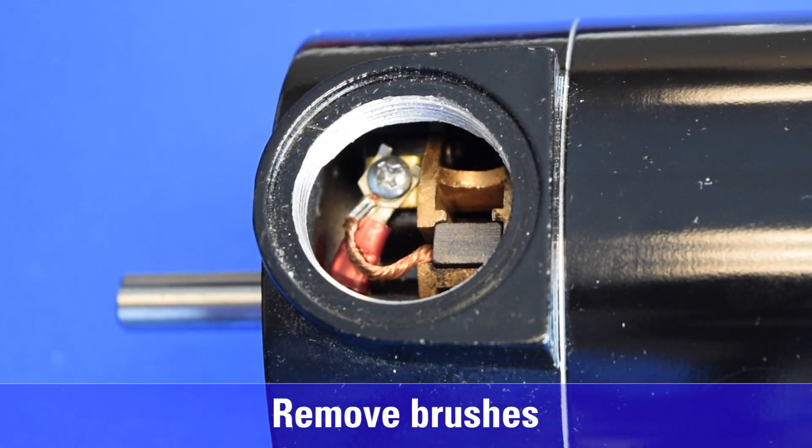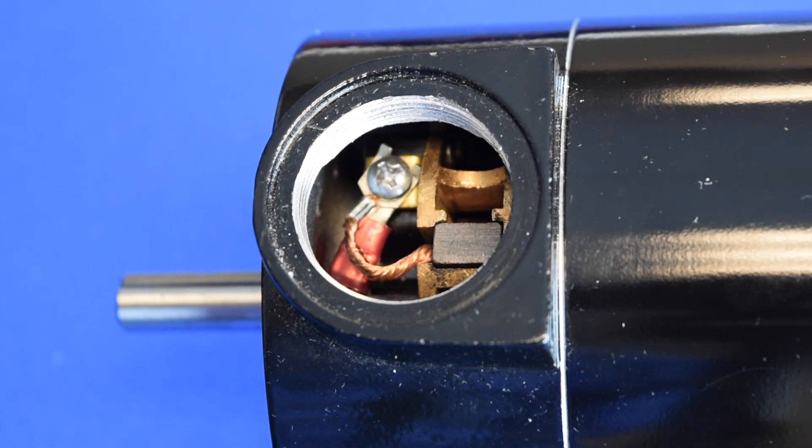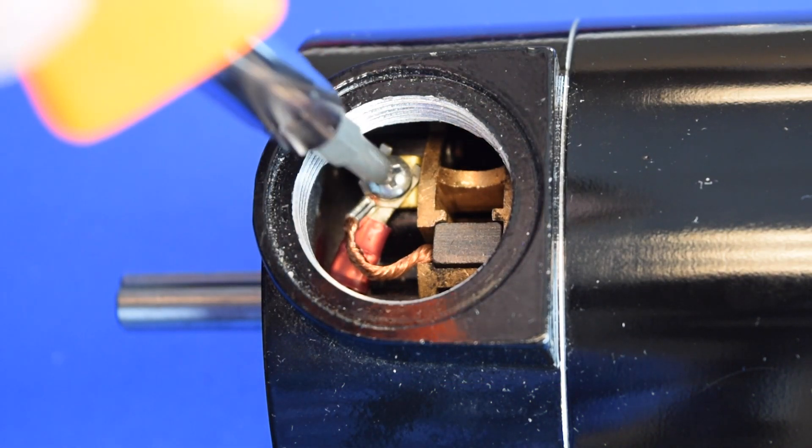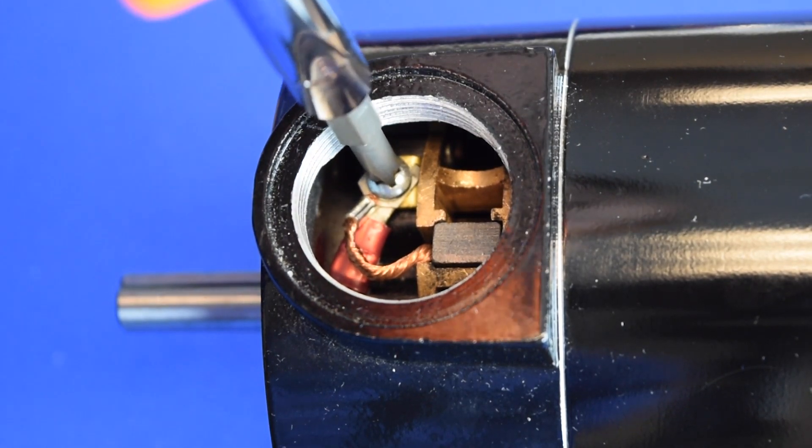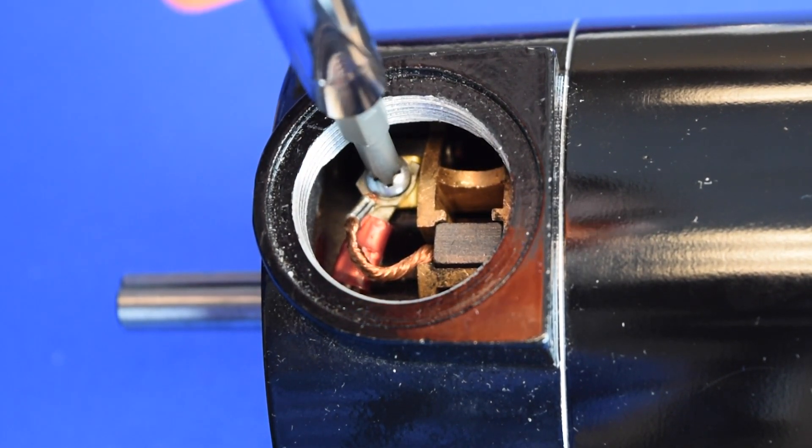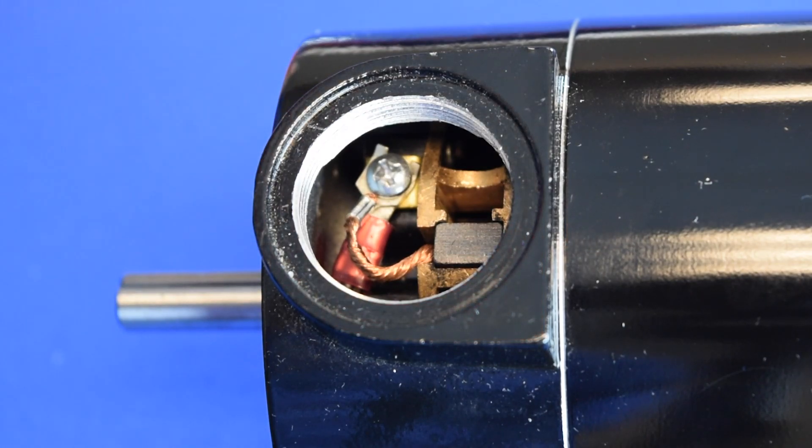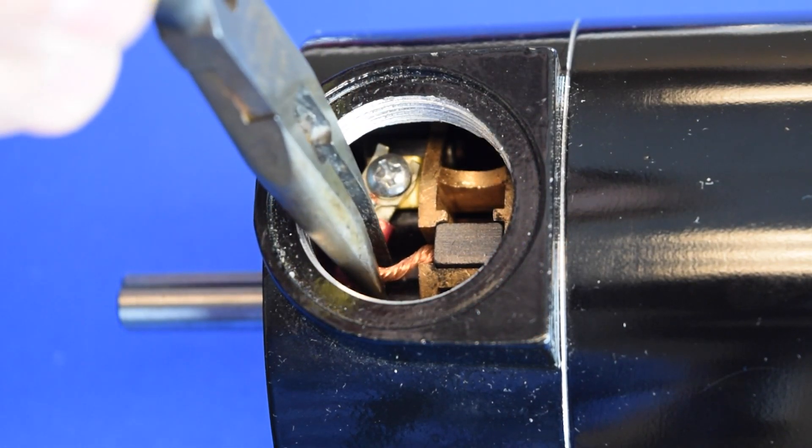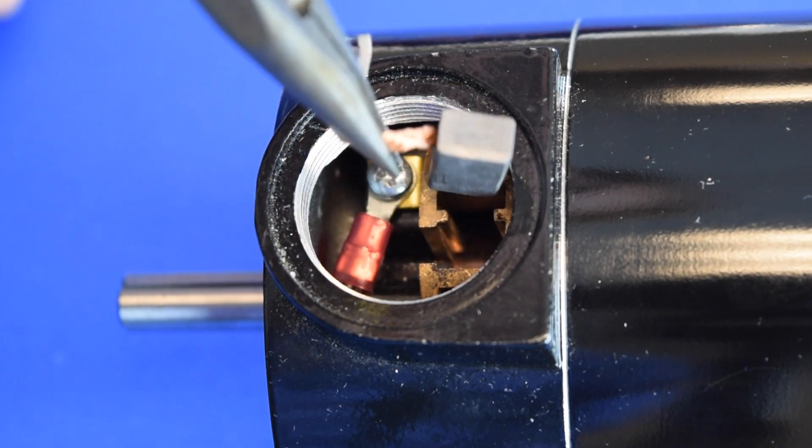To remove old or worn brushes, use a medium sized slotted or Phillips screwdriver. Loosen the screw that holds the brush wire by four turns. Do not remove the screw. Slide the brush wire terminal out from under the holding screw head and remove the brush. Repeat this procedure for the other brush.